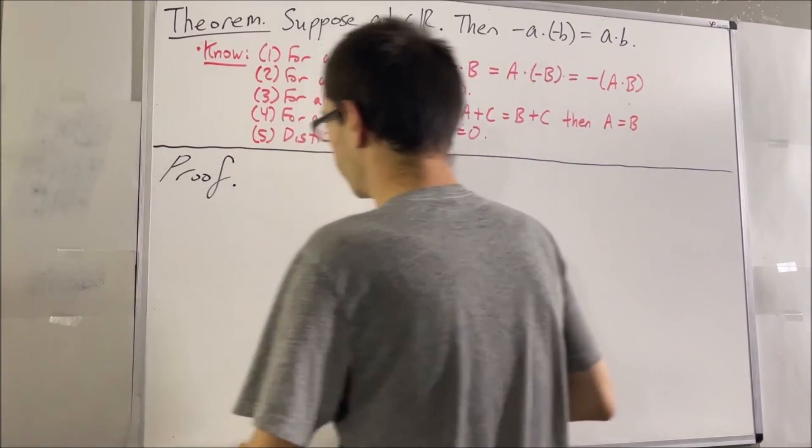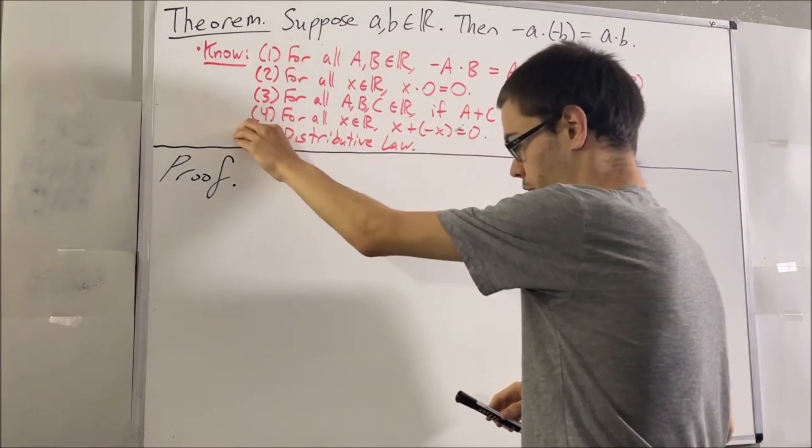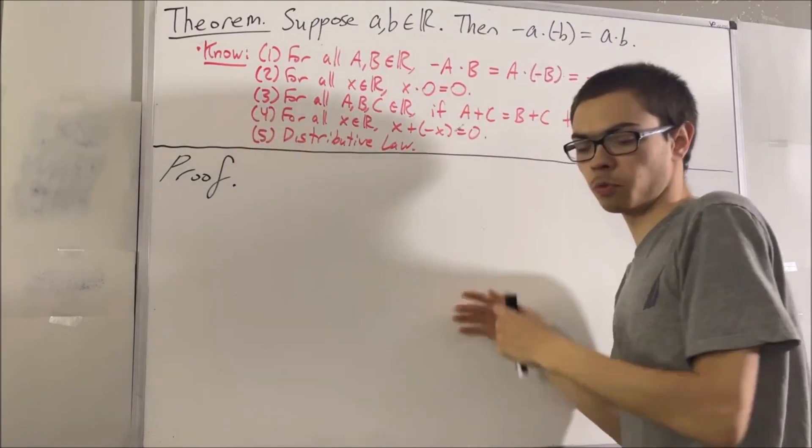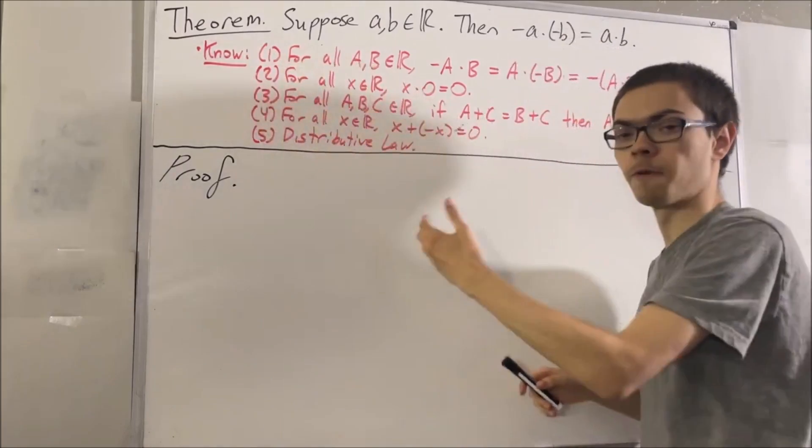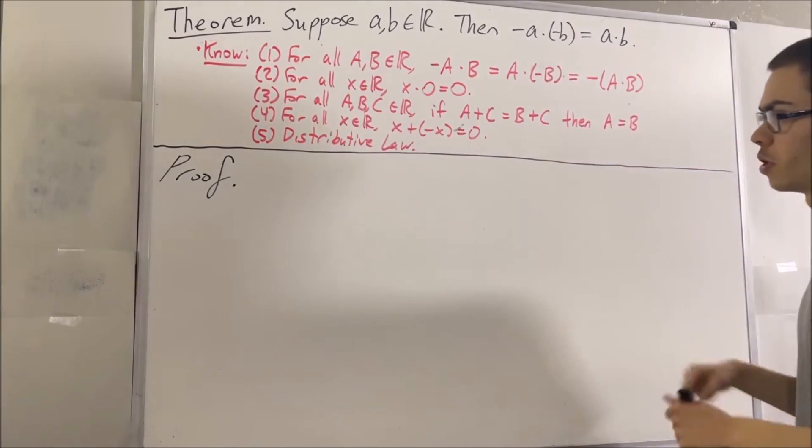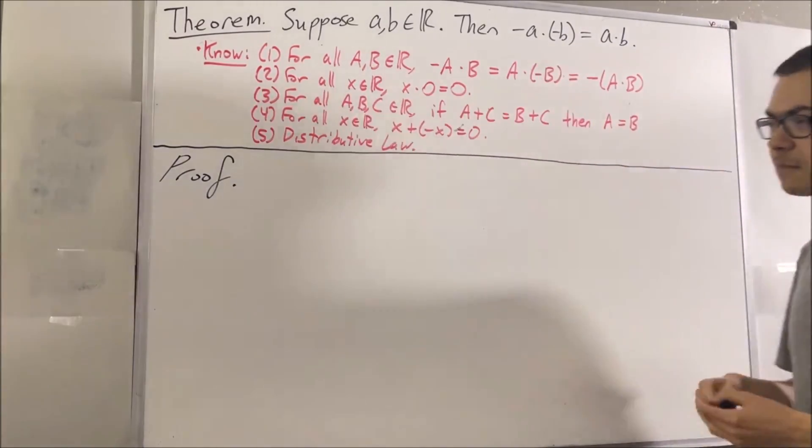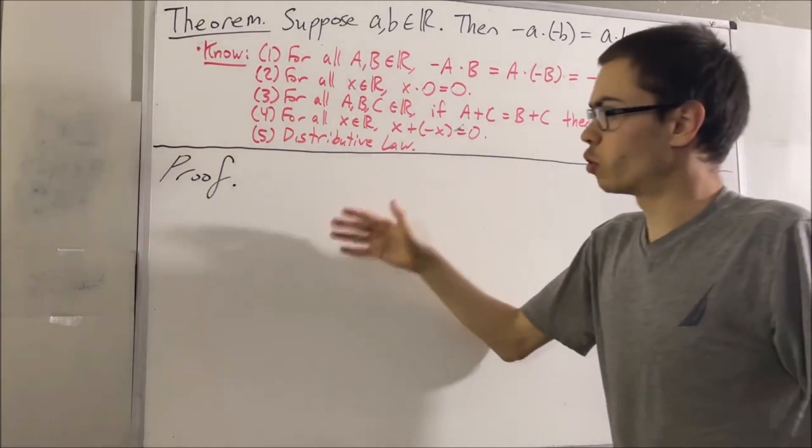Now the fourth and fifth properties we're using are built into the field properties of the real numbers themselves. The first three properties, you can deduce them from the field properties of the real numbers, which we've already done in previous videos. So now, let's get into proving this theorem.